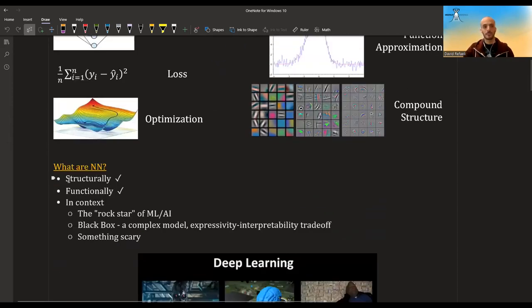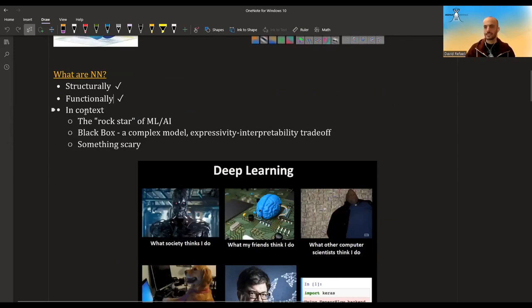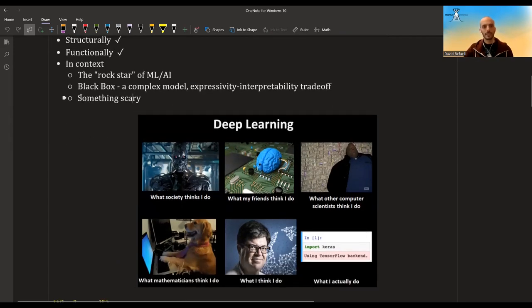What are they in the context of the world and machine learning and statistics? They're basically this rock star of machine learning and AI. They are very popular. They perform very well on many tasks. They're also considered a black box, just because they're so complex. They usually have a lot of parameters and it's impossible to really understand what's going on inside of them. This is part of their strength but also their weakness. It gives them a lot of expressivity, but takes away a lot of the ability to interpret what is going on. In general, neural networks seems to be something scary.